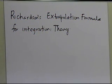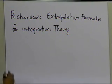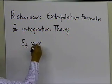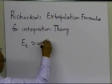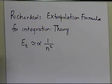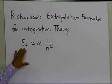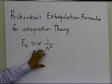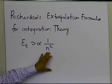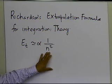What Richardson's extrapolation formula is based on is that the true error in the trapezoidal rule — in the multiple segment trapezoidal rule — is proportional to 1 over n squared. That basically means the true error is proportional to 1 divided by the square of the number of segments you are choosing for the trapezoidal rule.